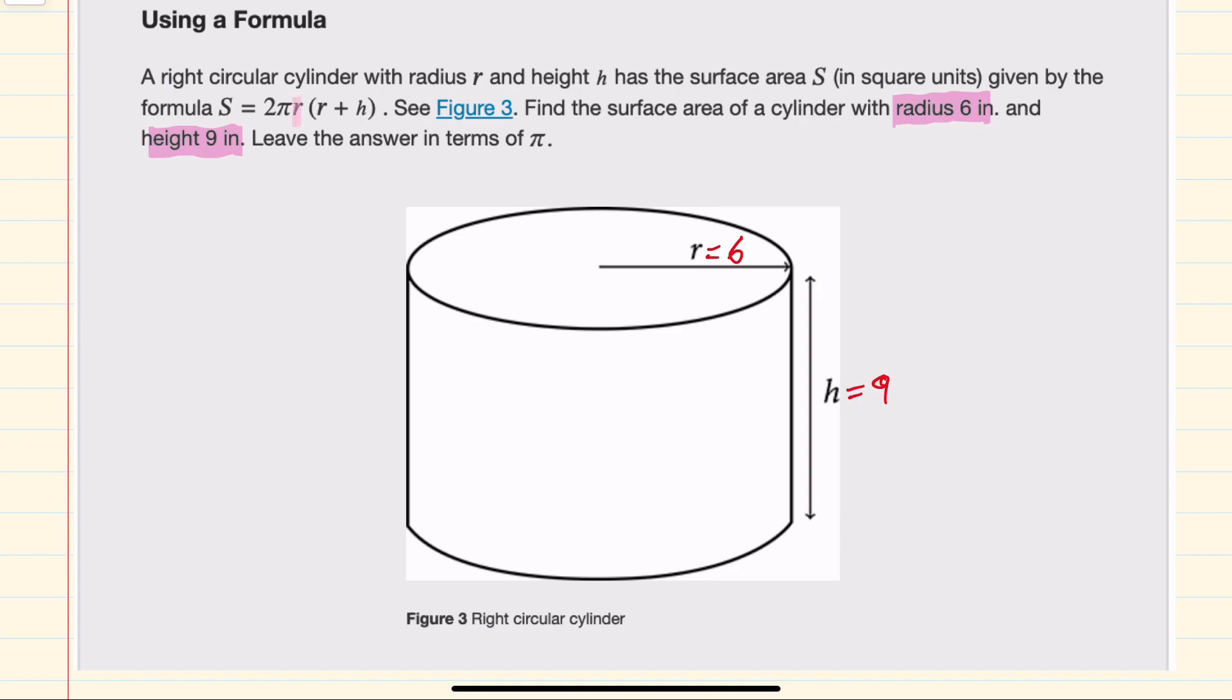Substituting these in for radius and height, we would have the surface area being 2π times the radius, which is 6, times the radius, again, 6, plus the height, which is 9. Following the order of operations,